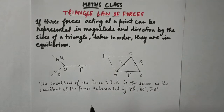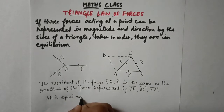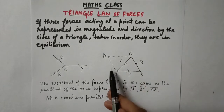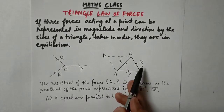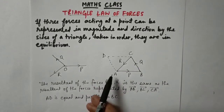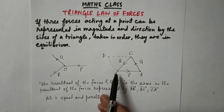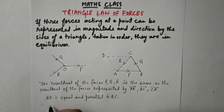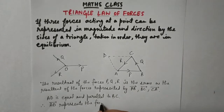We can say that AD is equal and parallel to BC, since it is a parallelogram — the opposite sides are both equal and parallel. We know that BC vector represents the Q force. Since the magnitude is the same and the direction from A to D is the same, AD vector will also represent the Q force, because it is equal to BC in magnitude as well as direction. Therefore, AD vector represents the force Q.